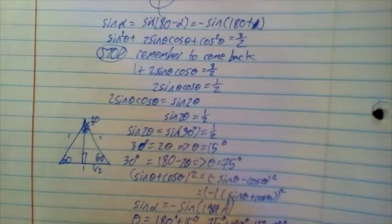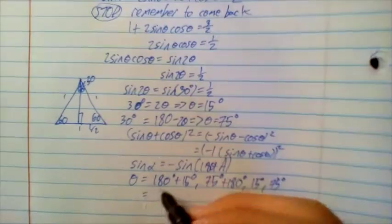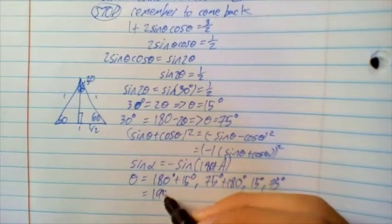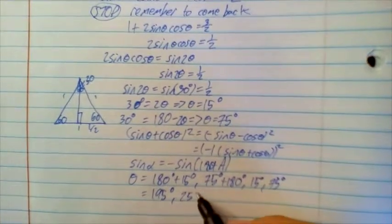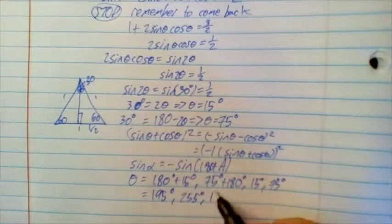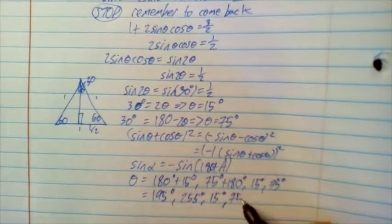So, we have that theta is equal to 195 degrees, 255 degrees, 15 degrees, and 75 degrees.